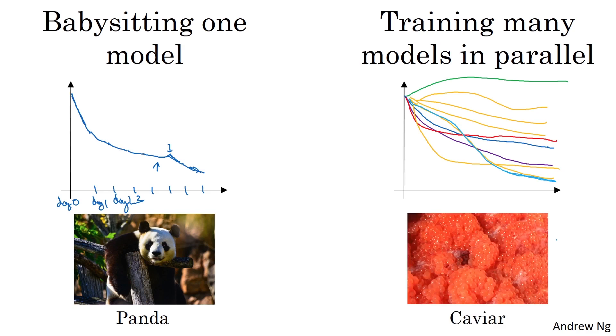Whereas the approach on the right is more like what fish do. I'm going to call this a caviar strategy. There's some fish that lay over 100 million eggs in one season, in one mating season. But the way fish reproduce is they lay a lot of eggs and don't pay too much attention to any one of them, but just see that hopefully one of them or maybe a bunch of them will do well. So I guess this is really the difference between how mammals reproduce versus how fish and a lot of reptiles reproduce. But I'm going to call it the panda approach versus the caviar approach since that's more fun and memorable.